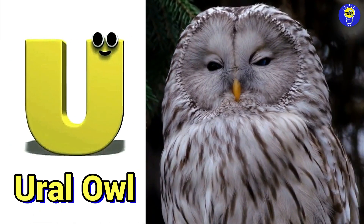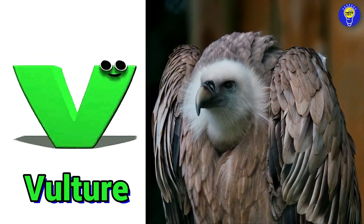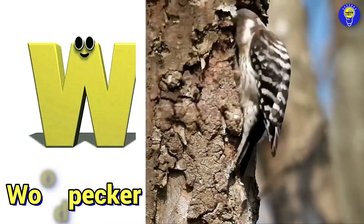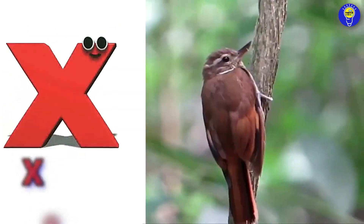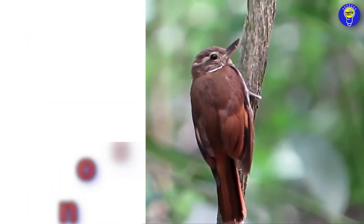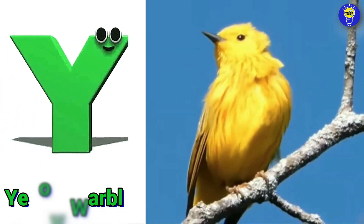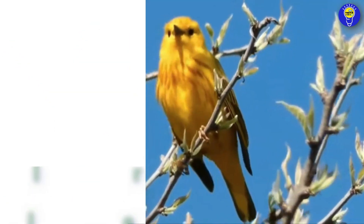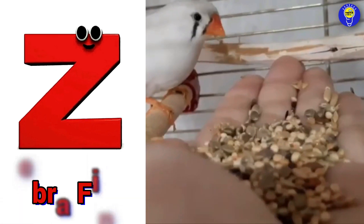U is for ural owl. V is for vulture. W is for woodpecker. X is for xenops. Y is for yellow warbler. Z is for zebra finch.